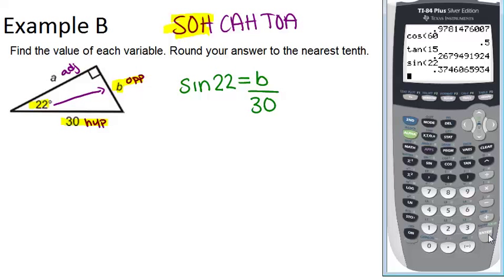And we have 0.3746. So at the end, we'll round to the nearest tenth, but for right now, you should round as little as possible. Now, to solve this, we can multiply both sides by 30 to cancel out that 30.